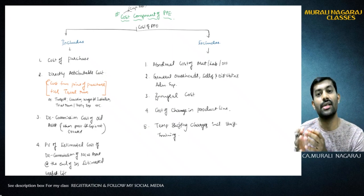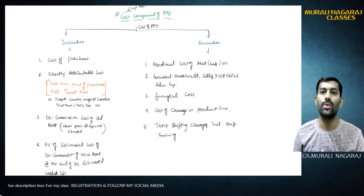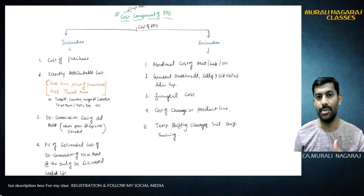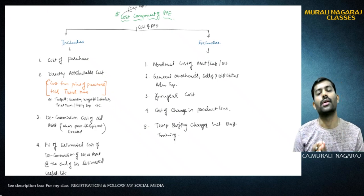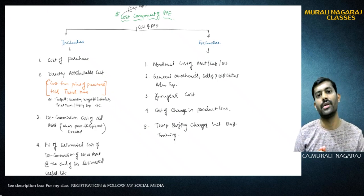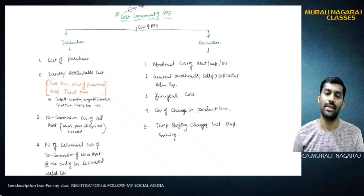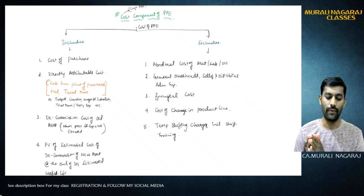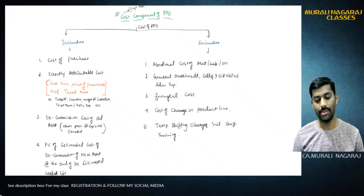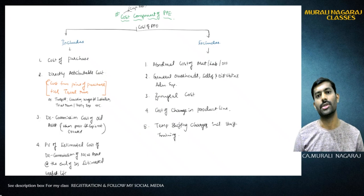Third, decommission cost of old asset: suppose in the place where you are going to install the new asset there is already an existing asset, and you have to decommission and dismantle it - that cost can be included. For IND AS 16 students, additionally the present value of estimated cost of decommission also applies, which is present in the old syllabus as well.